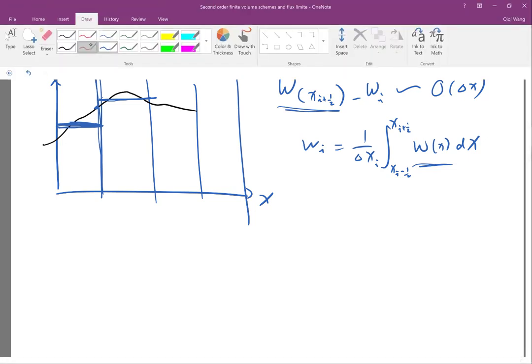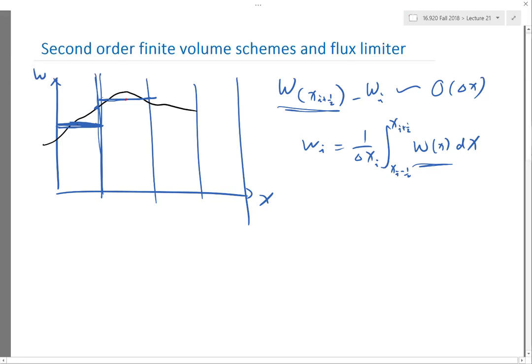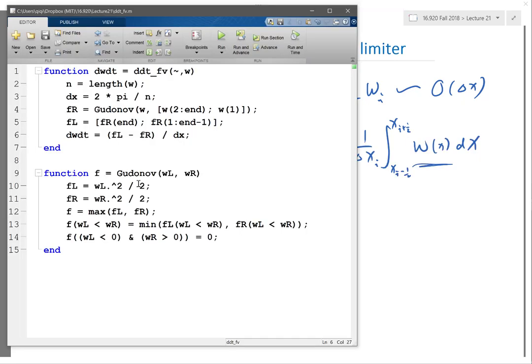But the problem is that it doesn't work across shock waves. If I have the two cells being on the two sides of the shock wave, using a linear approximation is going to give terrible errors. It creates a lot of oscillations around the shock waves. So we have seen this before, but we can do it again.